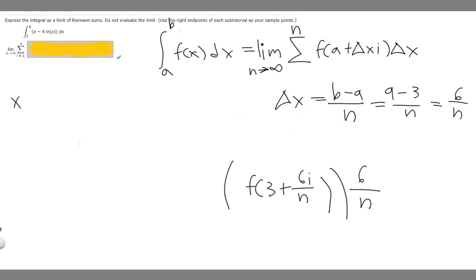So our function is going to be (x - 4) times ln(x). So wherever you see an x, just plug in what we have for the middle. So it's going to be (3 + 6i/n) - 4 times ln(3 + 6i/n). And then what we want to do, I'm going to surround this whole thing in parentheses, and then we multiply it by delta x, which is 6 over n.